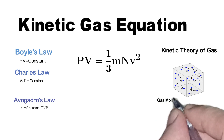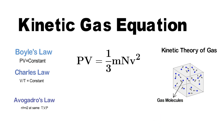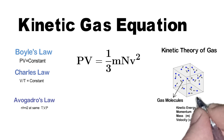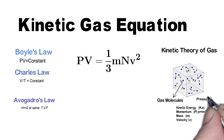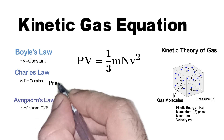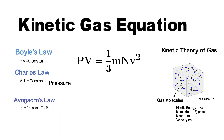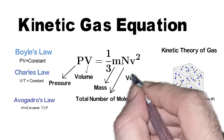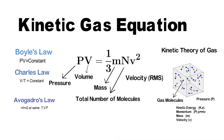Gases are composed of small particles known as molecules. Each of these molecules carries kinetic energy and momentum, and has mass and velocity. When these molecules strike the wall of the container, it exerts pressure. So according to the kinetic gas equation, pressure P times volume of the gas is equal to 1/3 mnV², where m is the mass of the molecule, n represents the number of molecules, and V is the velocity of the molecule.